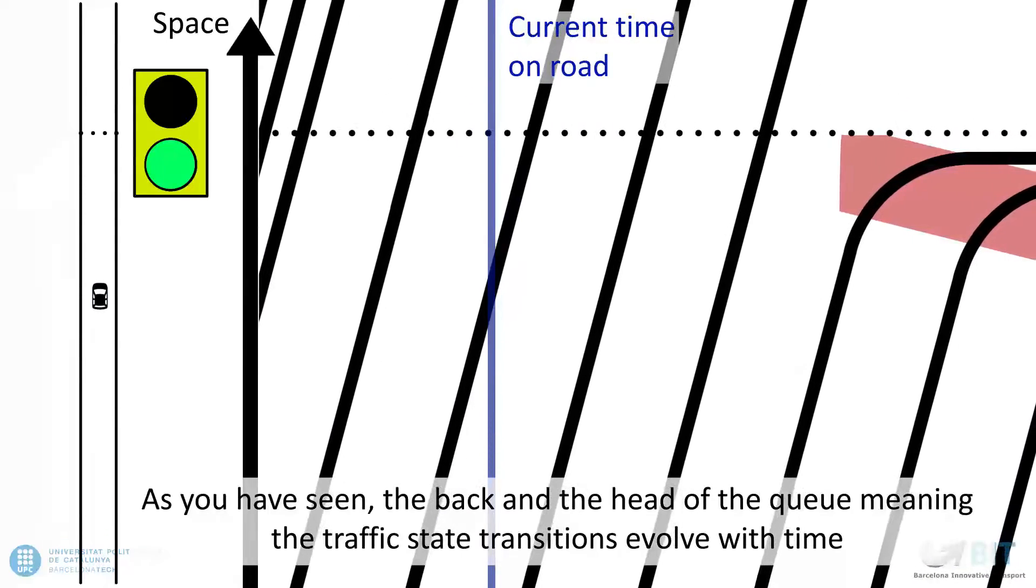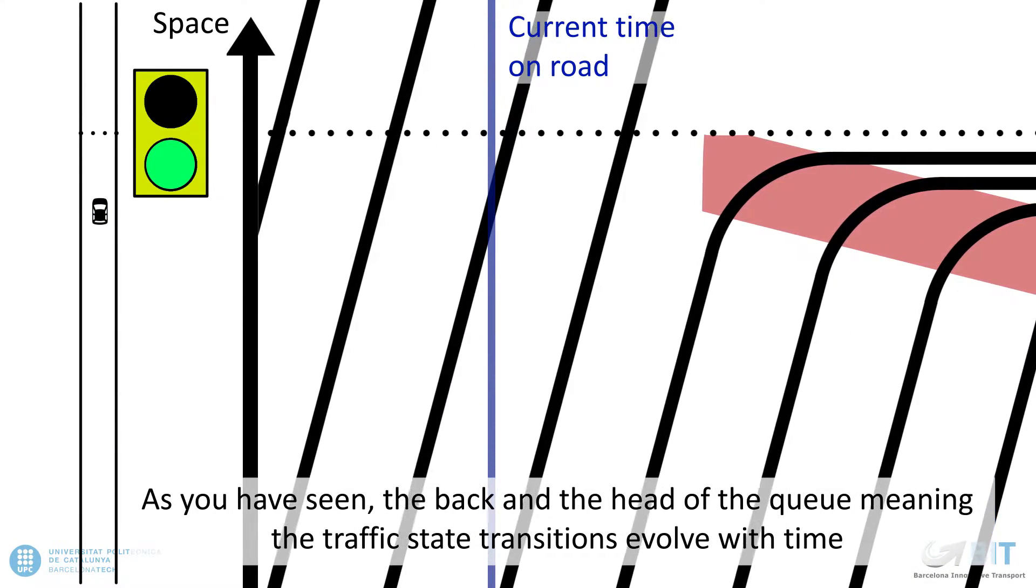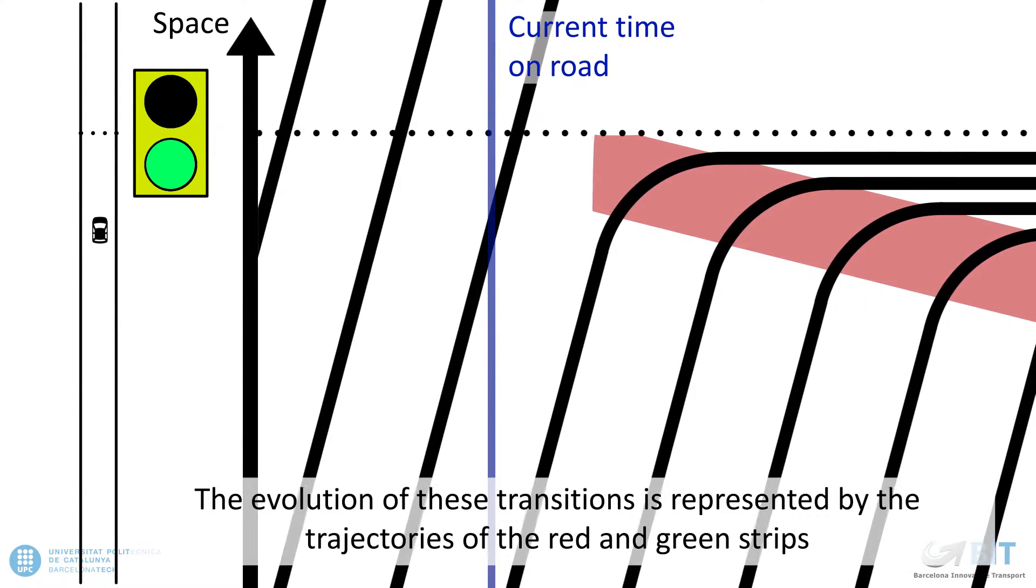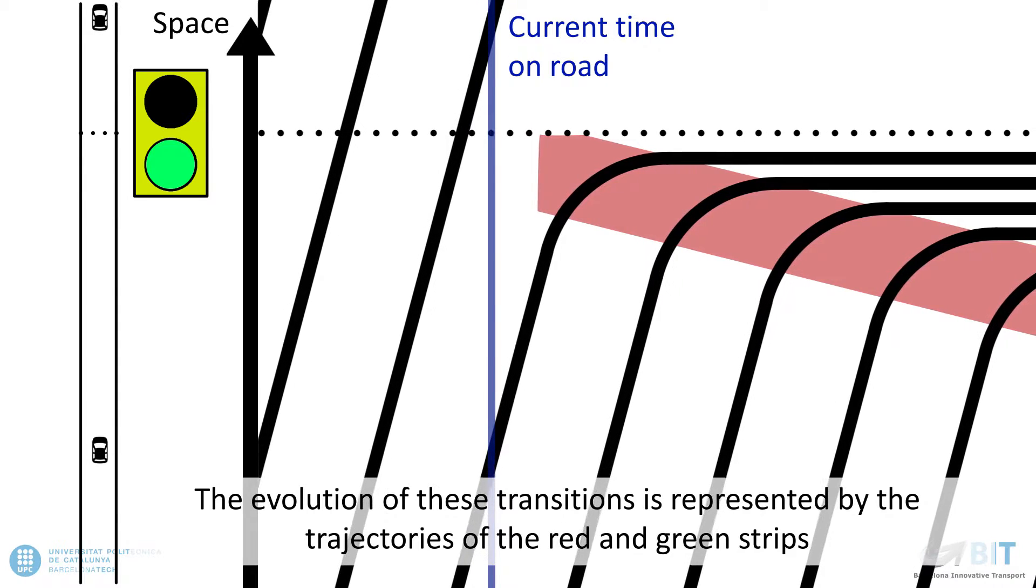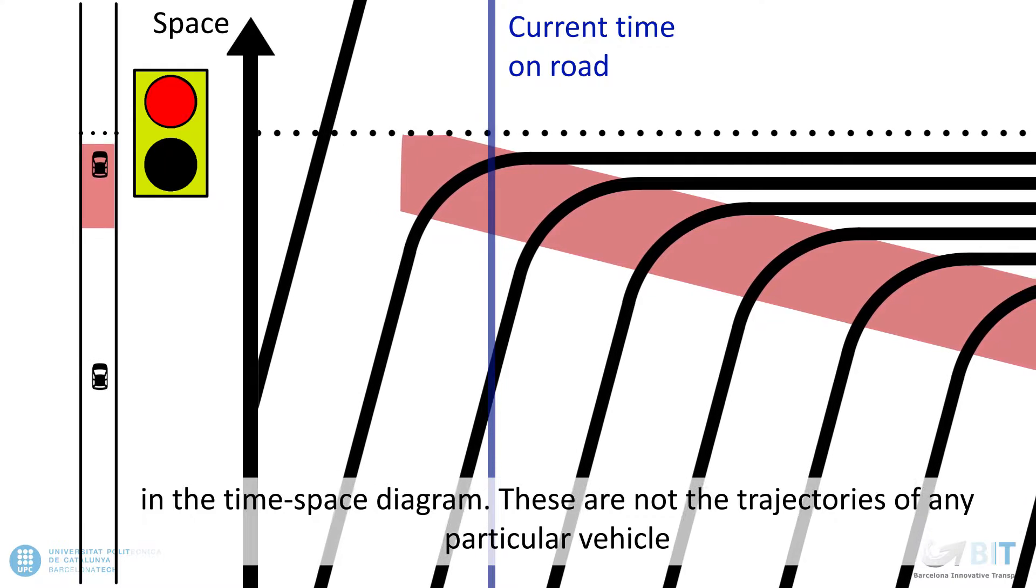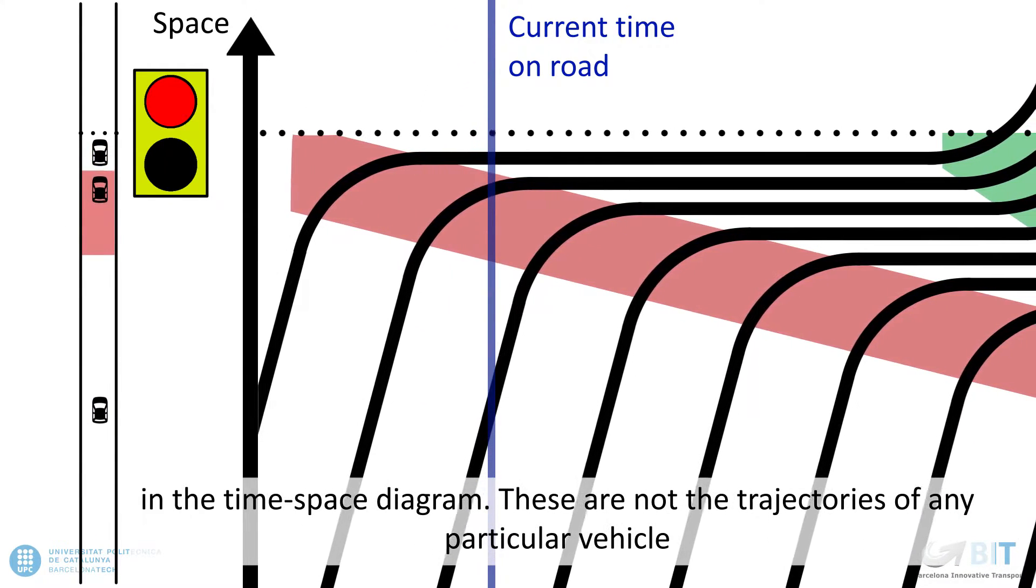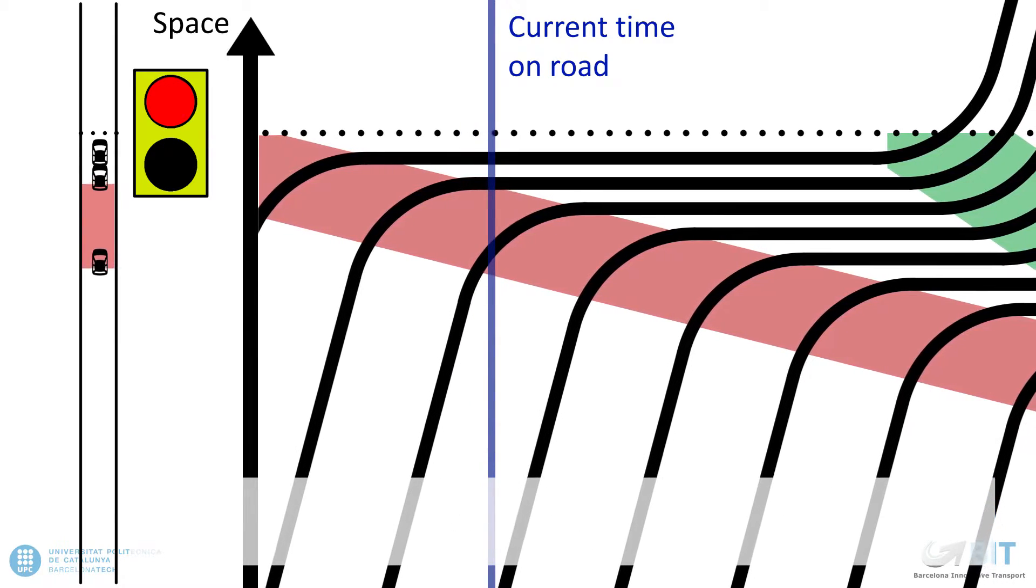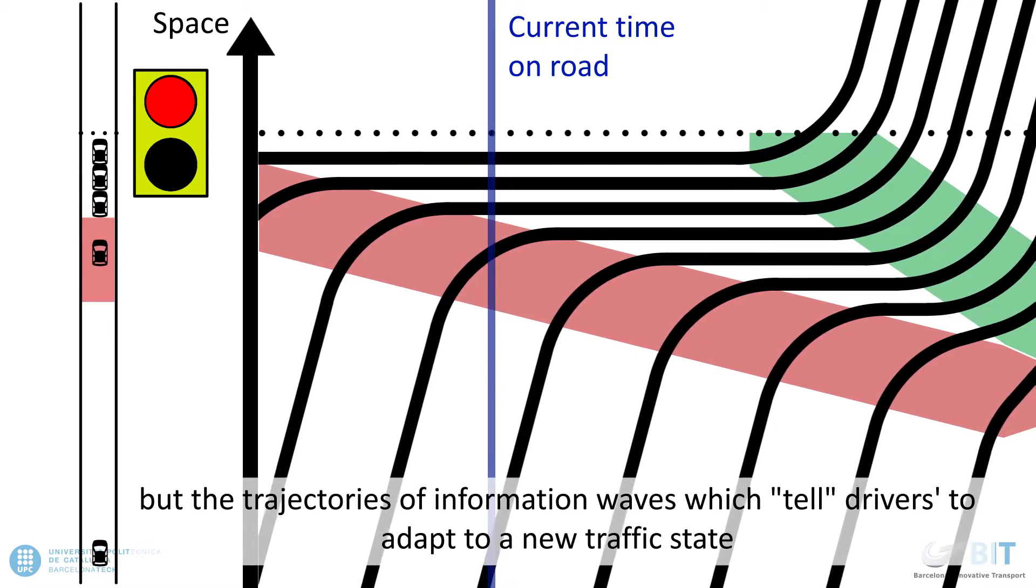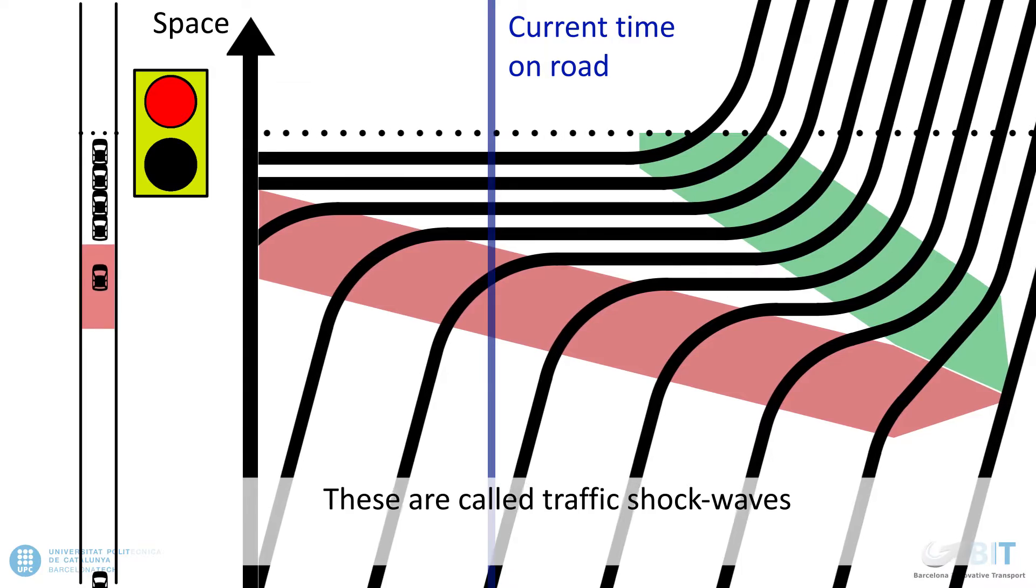As you have seen, the back and the head of the queue, meaning the traffic state transitions, evolve with time. The evolution of these transitions is represented by the trajectories of the red and green strips in the time-space diagram. These are not the trajectories of any particular vehicle, but the trajectories of information waves which tell drivers to adapt to a new traffic state. These are called traffic shock waves.